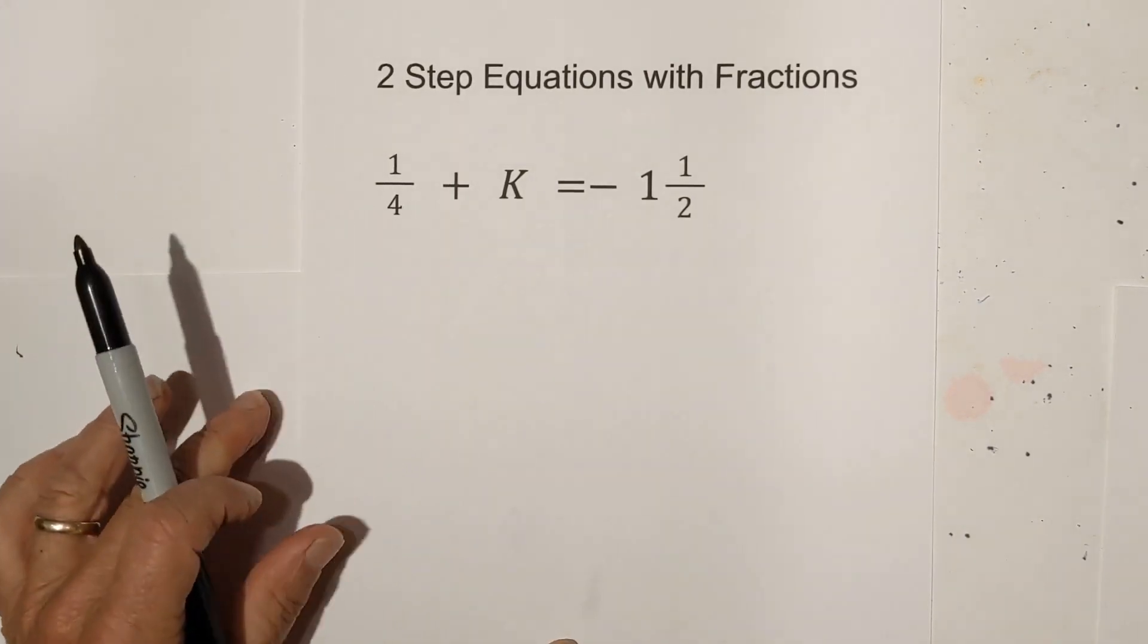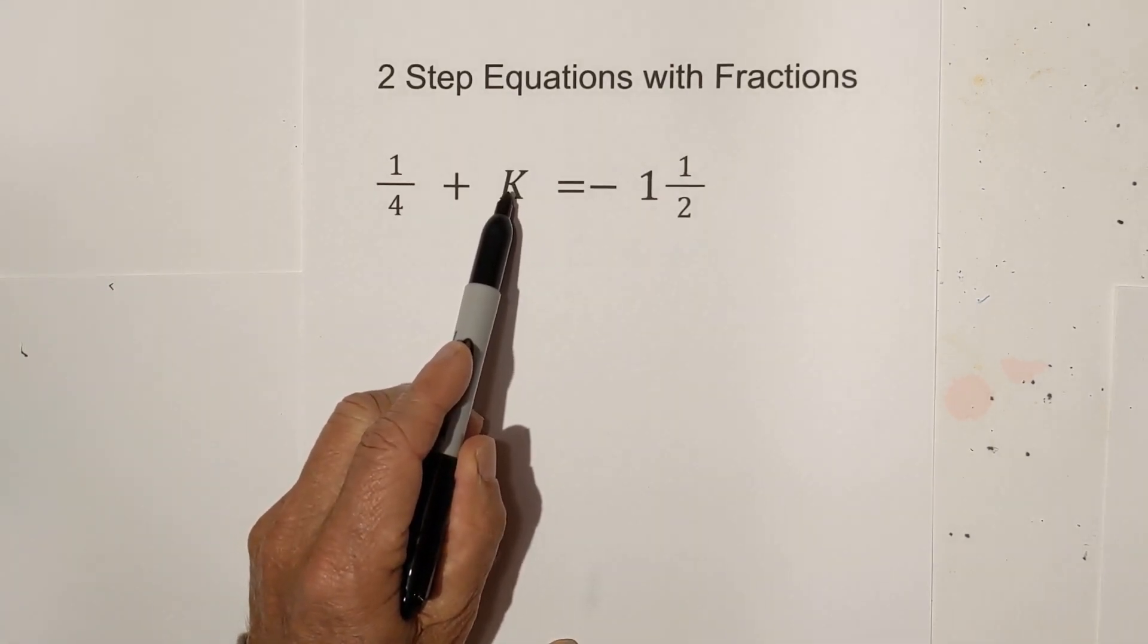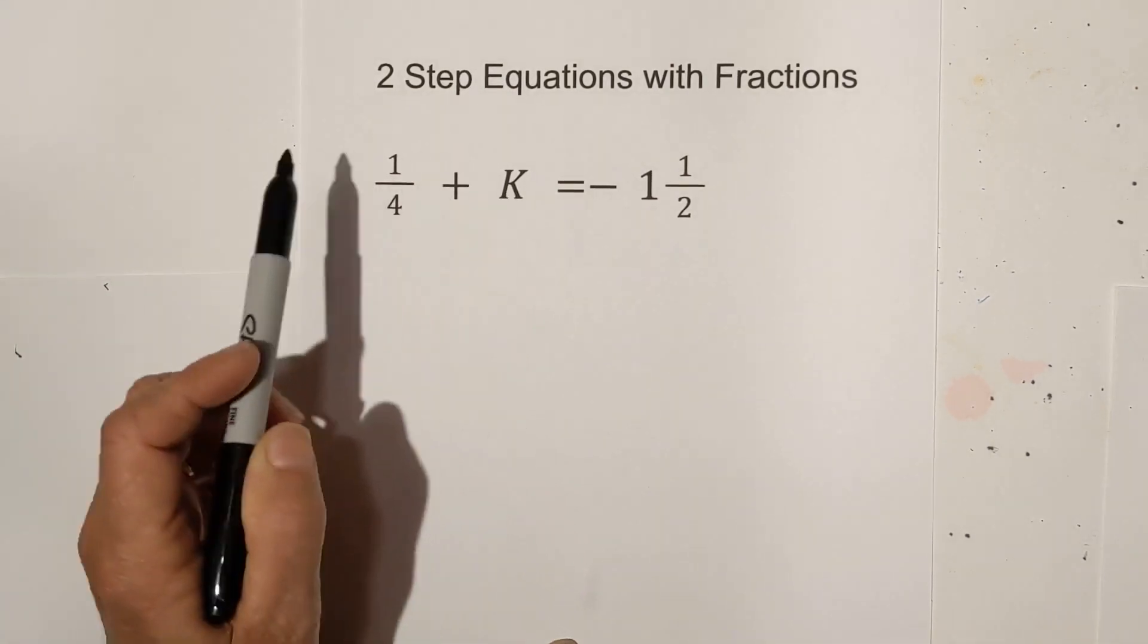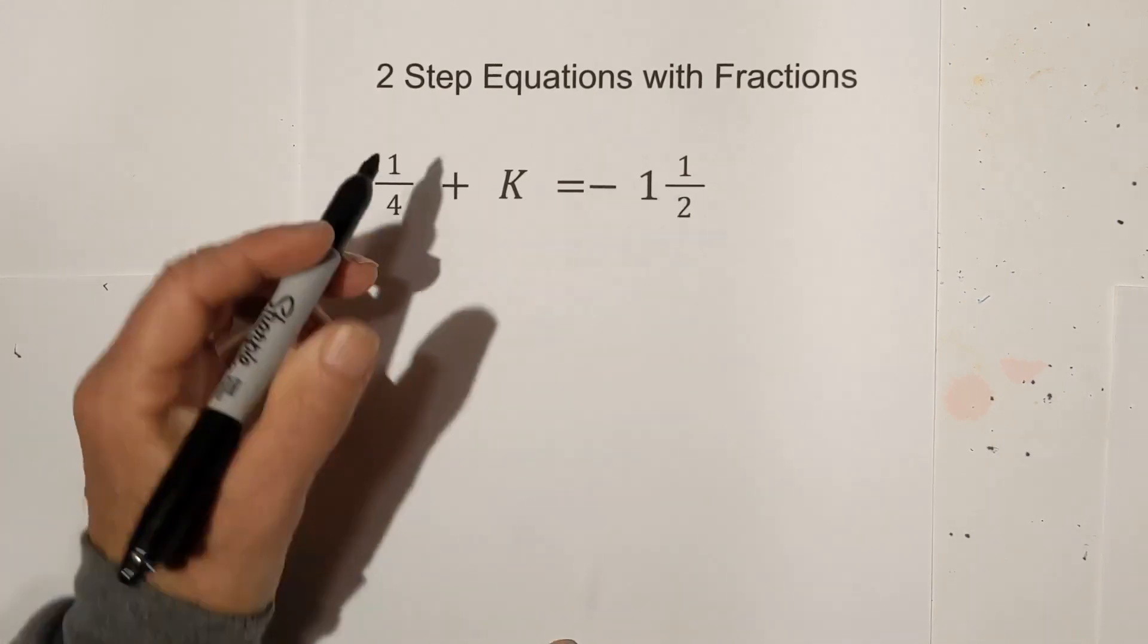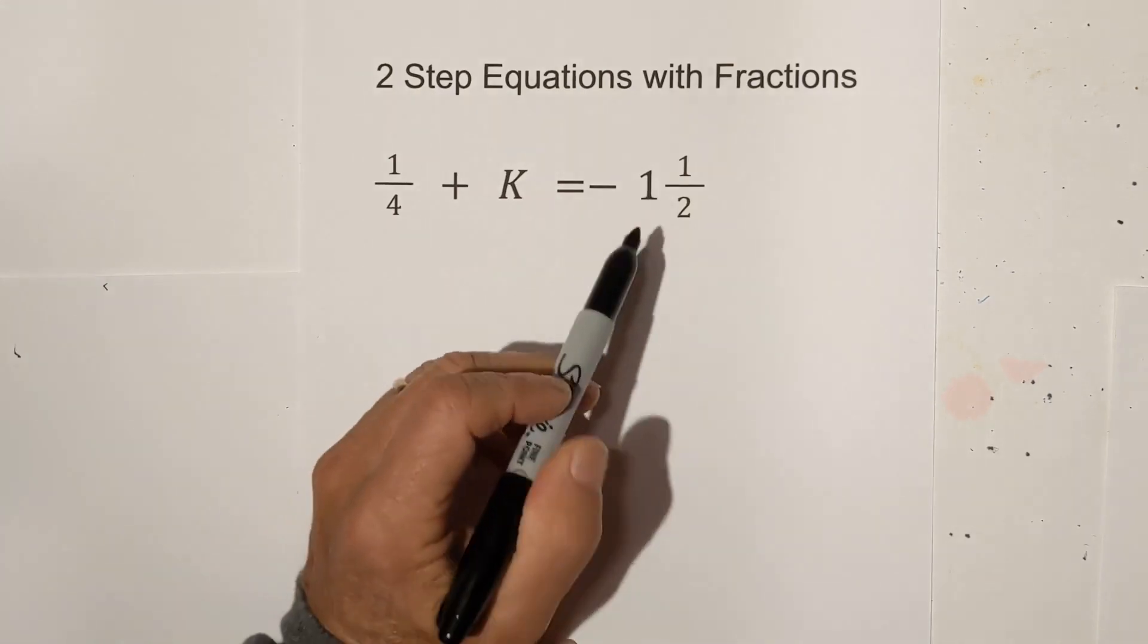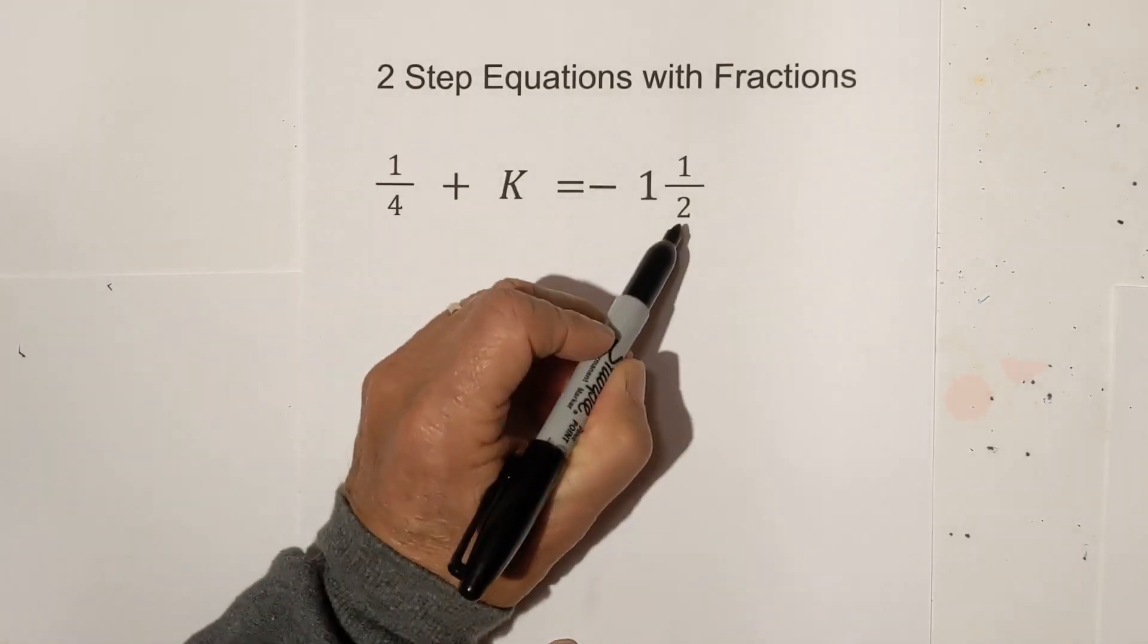Now, first thing we would like to do is get k by itself. So we'll need to subtract 1 fourth. But before we get started, I'd like to convert this to an improper fraction. Remember the sign here. This is going to be important.